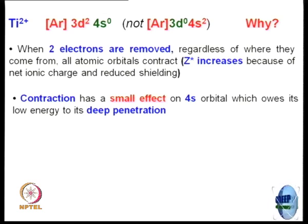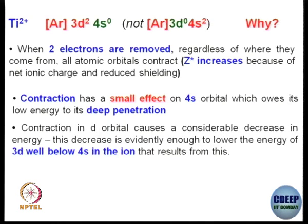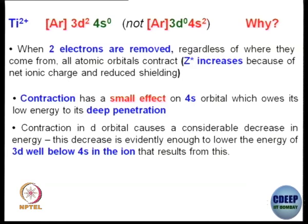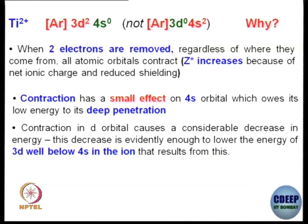During removal, since 4s is already lower in energy, the removal effect is felt more strongly at the 3d orbital — 3d orbital energy gets much more stabilized. Therefore, removal of electrons becomes much easier from 4s compared to 3d. To summarize: contraction in the d orbital causes a considerable decrease in energy, and this decrease is evidently enough to lower the energy of 3d well below 4s in the resulting ion — so removal of electrons from 4s is easier compared to removal from 3d.